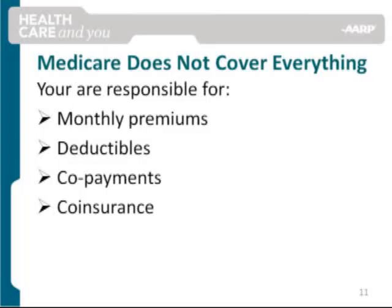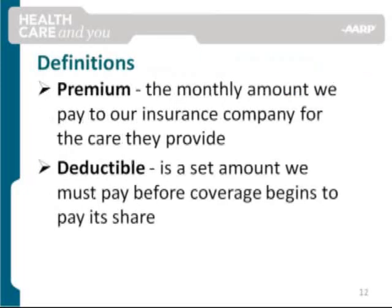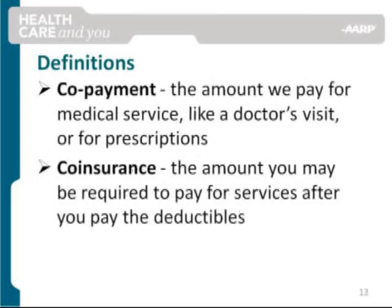Let us take a minute to briefly define these terms. A premium is the monthly amount we pay to our insurance company for the care they provide. A deductible is a set amount we must pay before coverage begins to pay its share. Co-payment refers to the amount we pay for a medical service, like a doctor's visit or for prescriptions. Co-insurance is the amount you may be required to pay for services after you pay the deductible, implying that the insurance plan does not cover 100% of the costs for services.